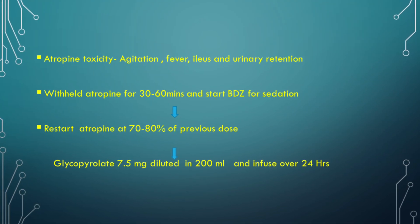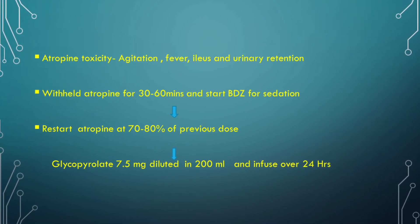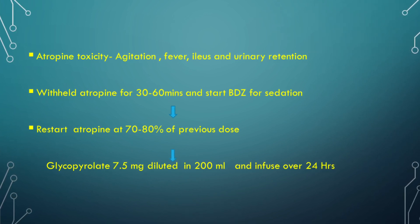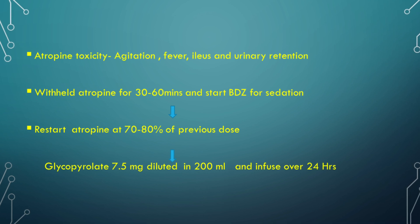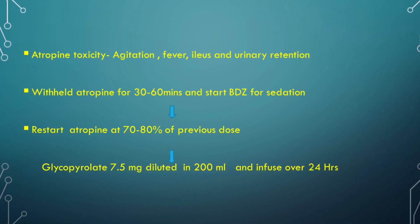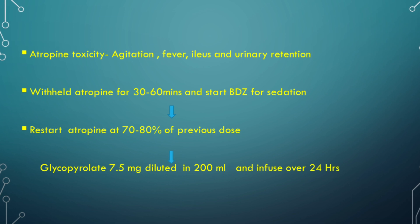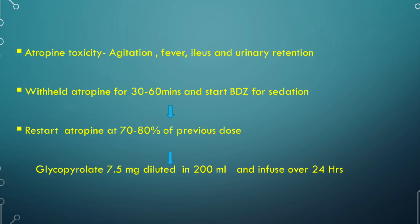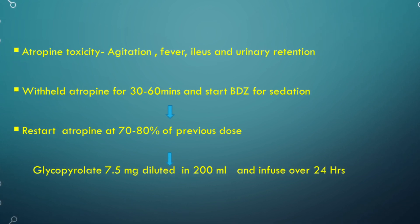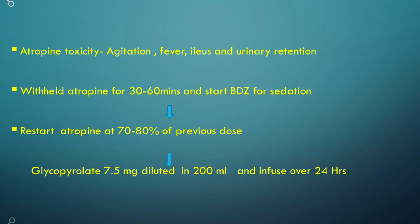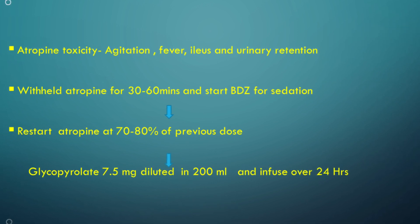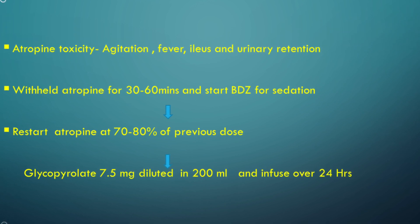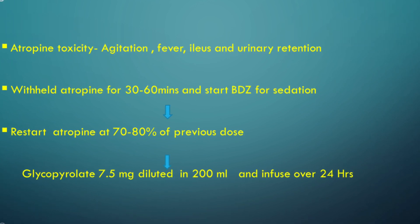While atropinizing, one should be aware of signs and symptoms of atropine toxicity, which include agitation, fever, ileus, and urinary retention. If suspected, withhold the atropine dose for 30–60 minutes and administer intravenous benzodiazepines for sedation. If symptoms improve, restart atropine at 70–80% of the previous dose. If there is a recurrence of similar symptoms, add injection glycopyrrolate 7.5 mg diluted in 200 ml of normal saline to be infused over 24 hours.